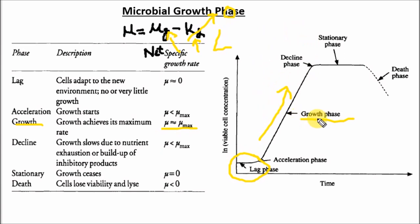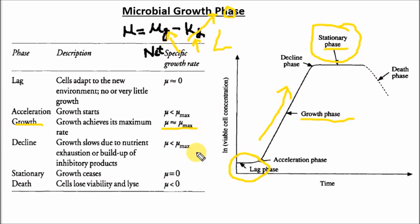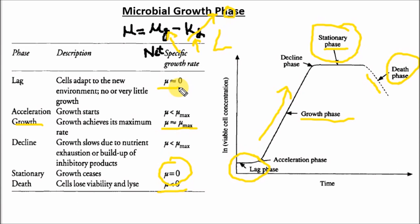In the decline or deceleration phase, growth slows down due to nutrient depletion or accumulation of toxic products. In the stationary phase, the specific growth rate constant equals the specific death rate constant — μg = kd — so the net specific growth rate μ is equal to zero. In the death phase, kd is much greater than μg, so the net μ is less than zero. To summarize: μ ≈ 0 in lag and stationary phases, μ > 0 in growth phase, and μ < 0 in death phase.